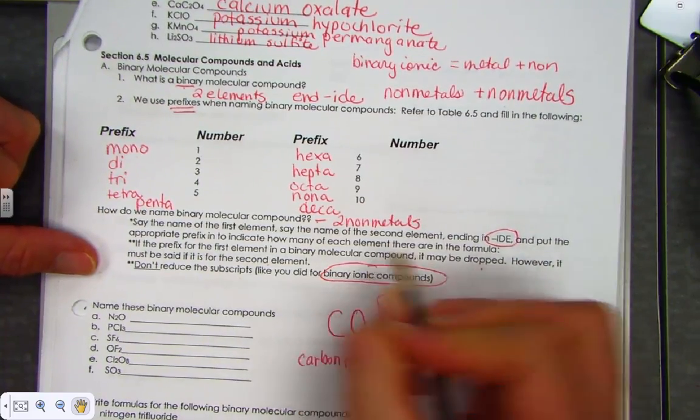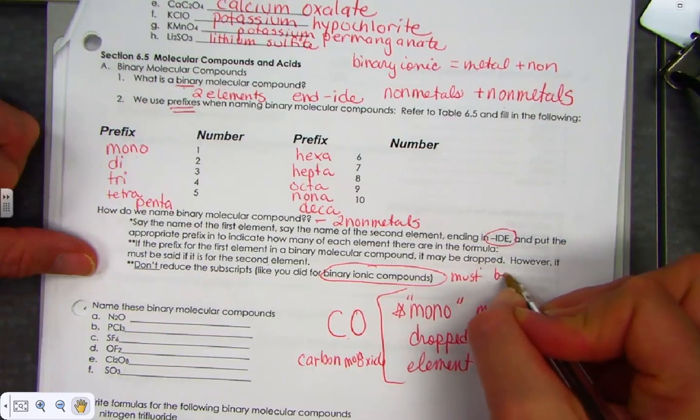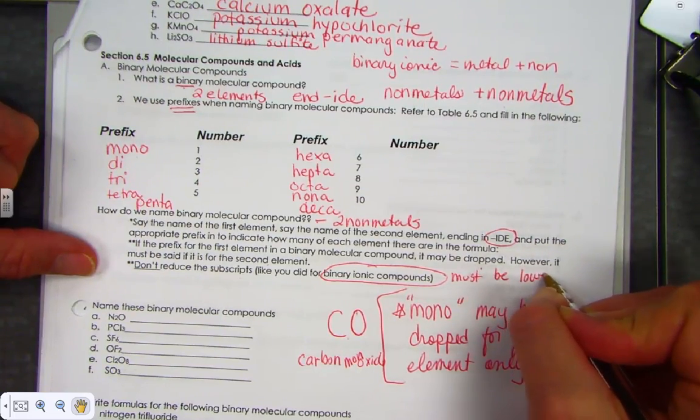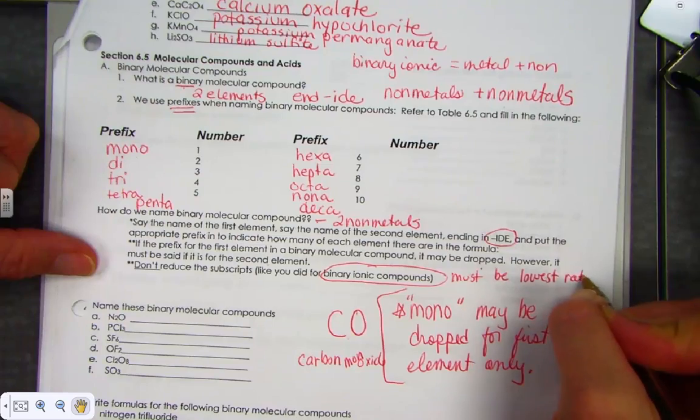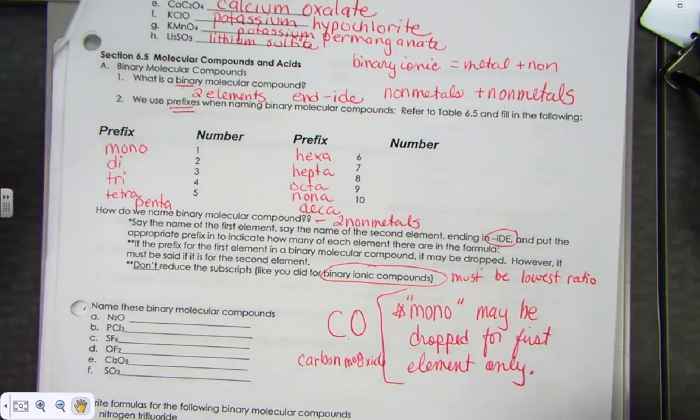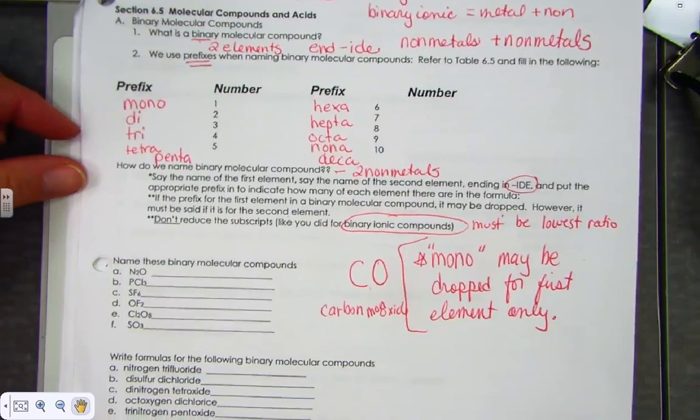Do not reduce the subscripts as we did for binary ionic compounds. Binary ionic compounds must be in the lowest ratio possible. Binary molecules, leave them alone.